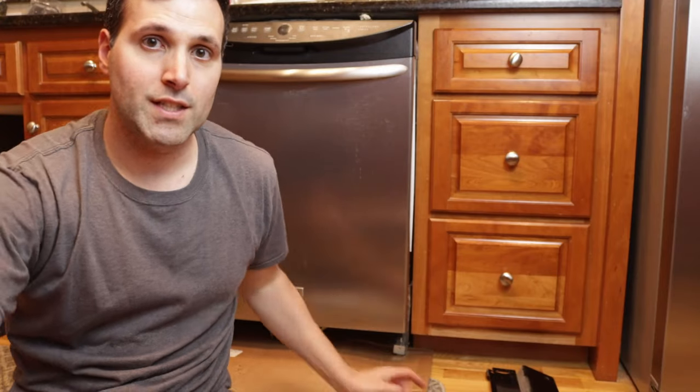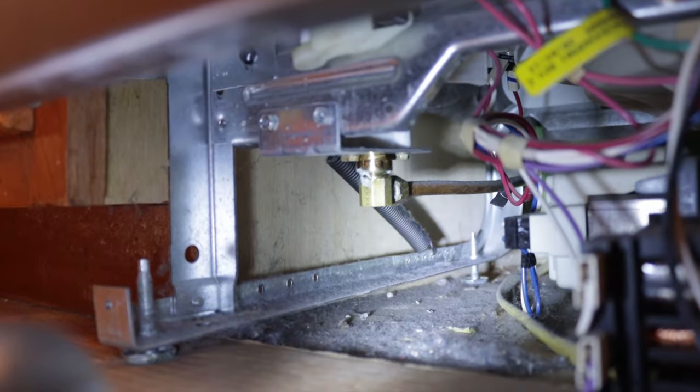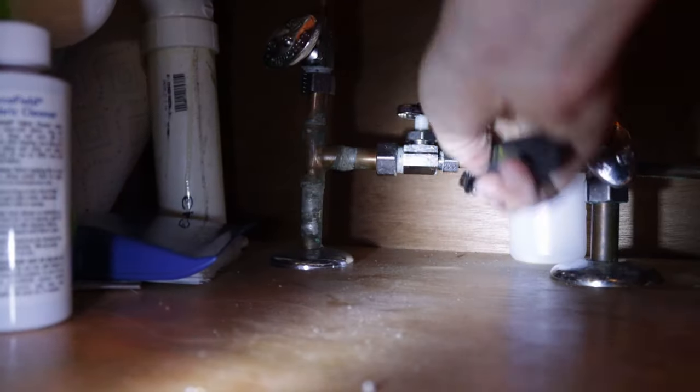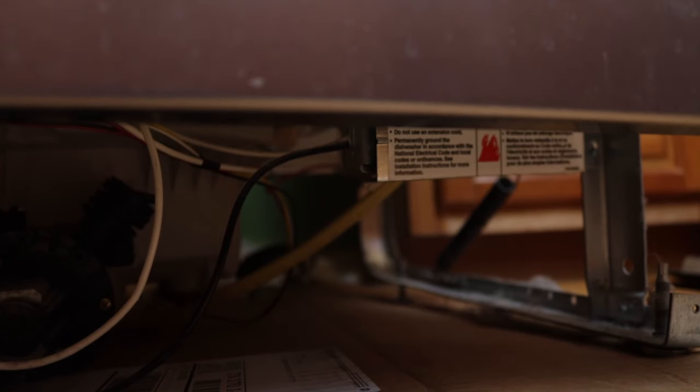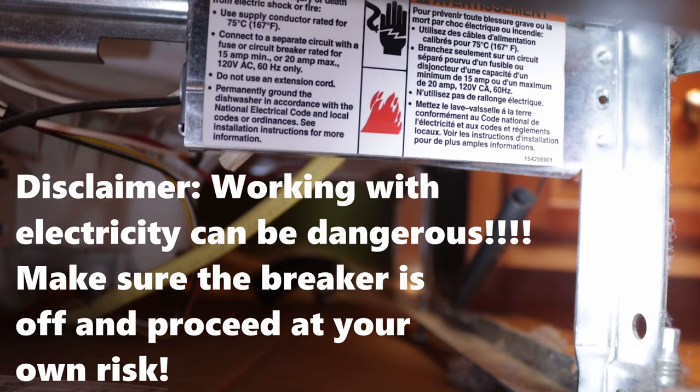I just need to remove the water line and the drain line and then we'll finish sliding it out the rest of the way. So now we just got to disconnect the power and we'll be ready to dump this guy out. We'll remove the cover there and unsplice the wires.